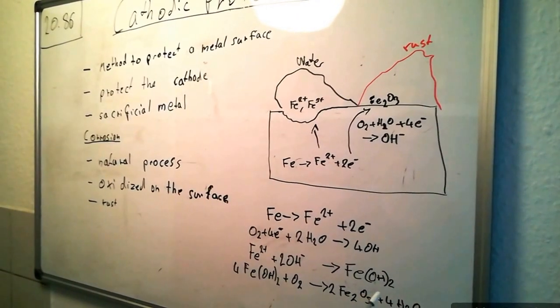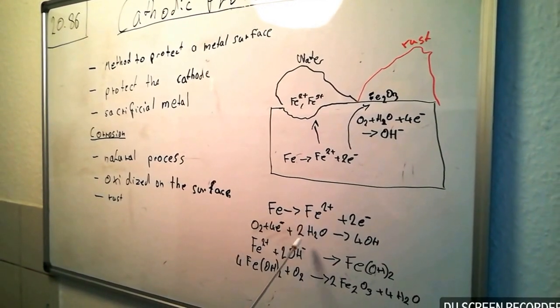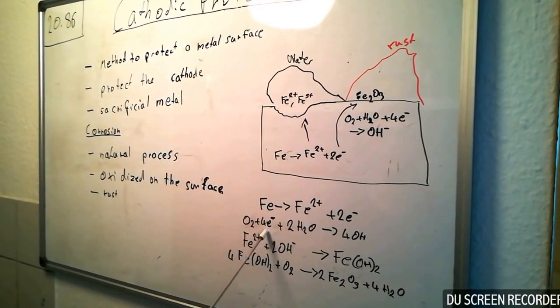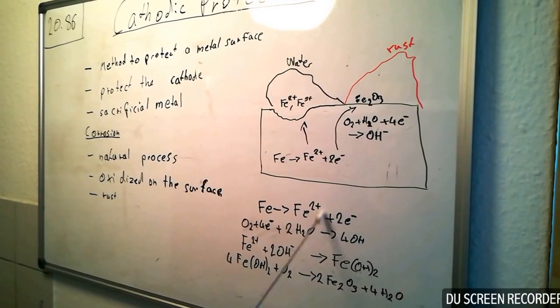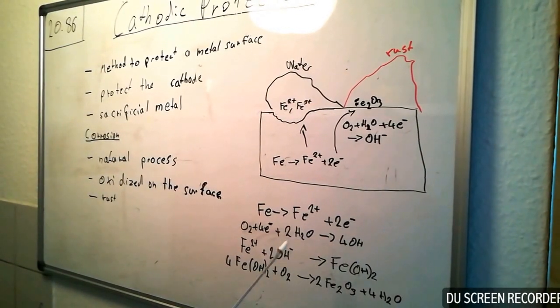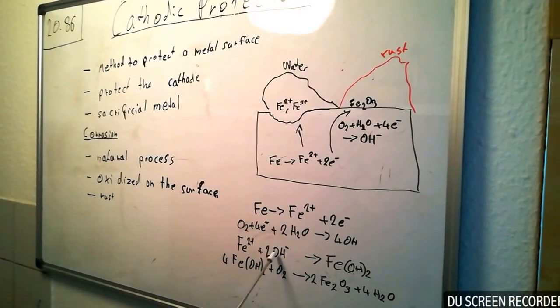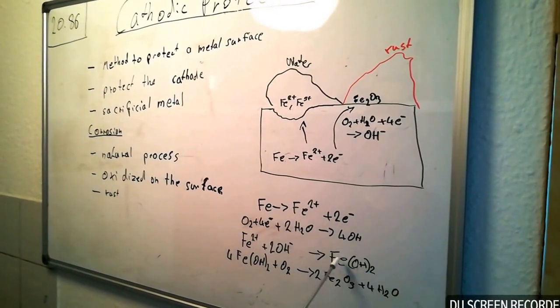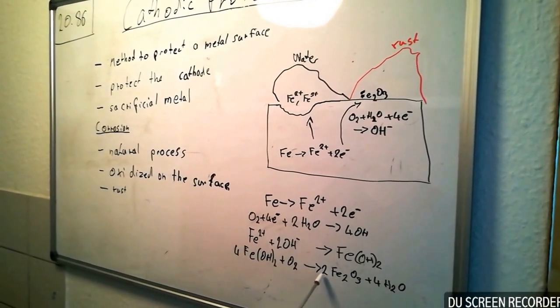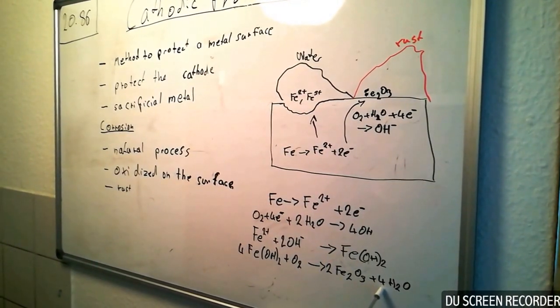Okay, now we come to the chemical process of the corrosion. First of all, the iron reacts to Fe²⁺ plus 2e⁻. After that, O₂ reacts with 4e⁻ - the electrons come from here - plus 2H₂O to 4OH⁻. After that, the Fe²⁺ from here reacts with the hydroxide to Fe(OH)₂. After that, the Fe(OH)₂ reacts with O₂ to Fe₂O₃ - that's the rust, that's the brown surface - plus 2-4H₂O.